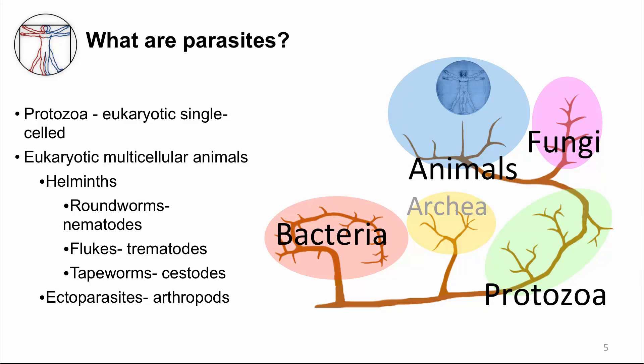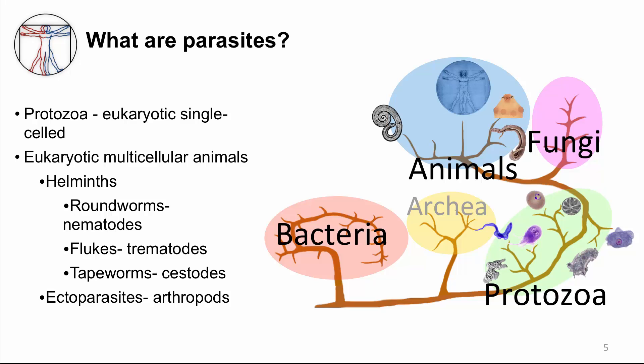In medicine, we define parasites in two groups. The first are protozoa, which are single-cell eukaryotes. The second are eukaryotic multicellular animals, which include helminths, also known as worms. There are two types of worms: the roundworms, or nematodes, and the flatworms, which are the flukes or trematodes, and the tapeworms or cestodes. Multicellular animals also include ectoparasites, which are the arthropods — that is, insects, ticks, and mites.